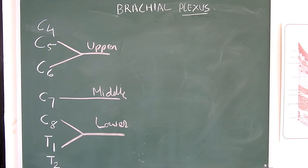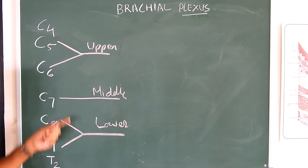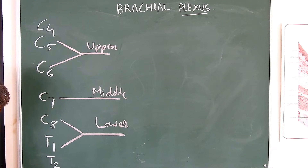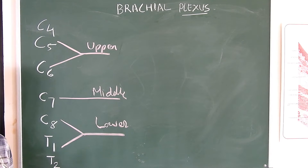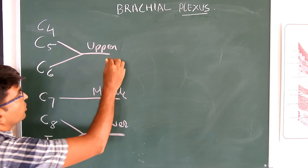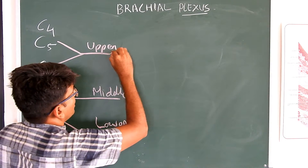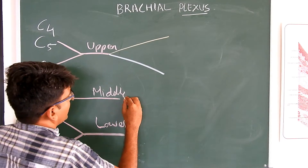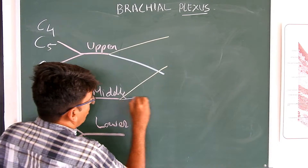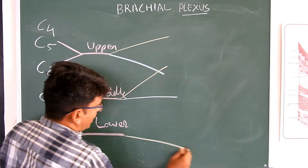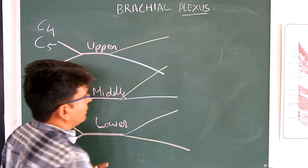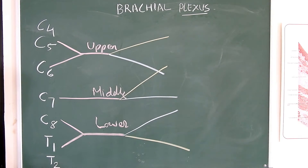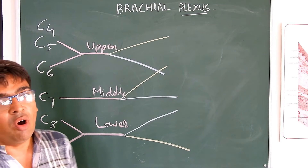Each of these three trunks — upper, middle, and lower — divides into an anterior division and a posterior division. The anterior divisions are shown in yellow and the posterior divisions in blue. These form the divisions of the brachial plexus, which in turn form the cords.